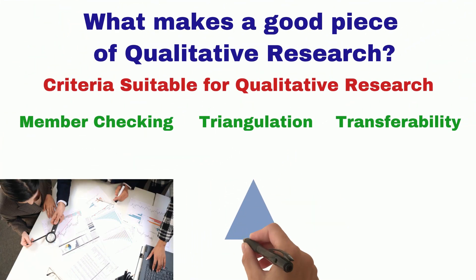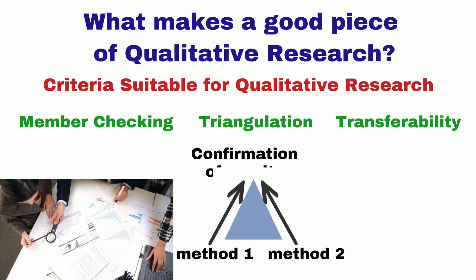Triangulation involves two or more data collection sources to examine the same phenomenon. For example, interviews, observations, pictures, documents with the aim of getting almost similar results.